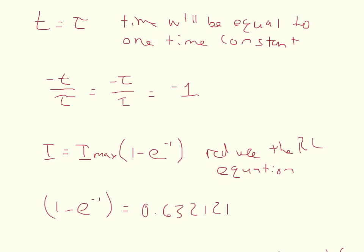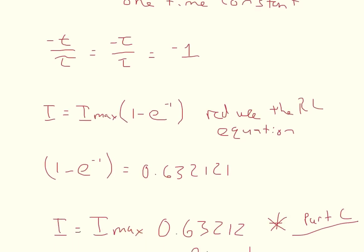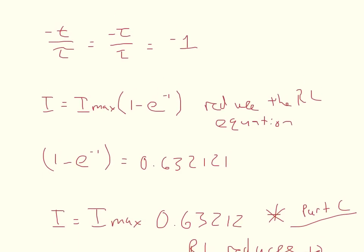So the current after one time constant is about 63% of the maximum current. And so you just plug that, basically you substitute this back into the into this equation. And that's what you get.